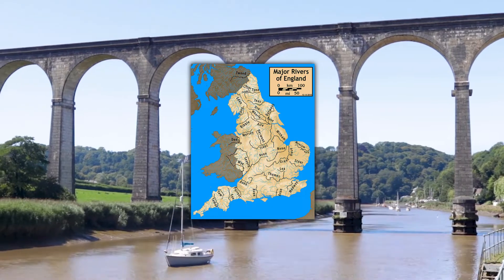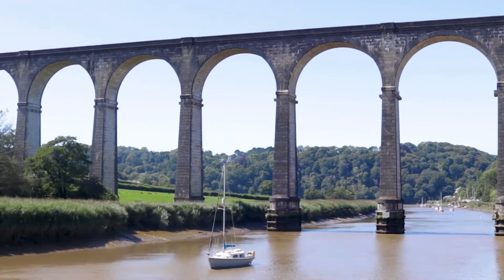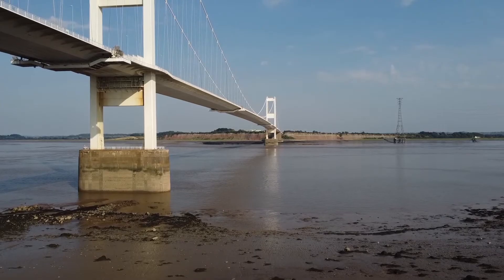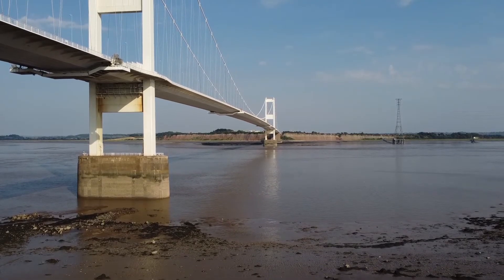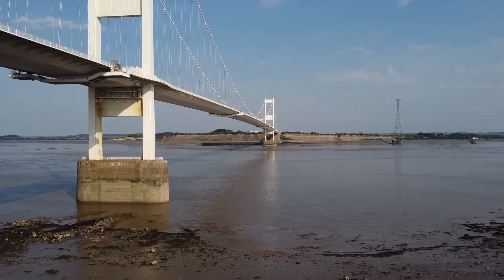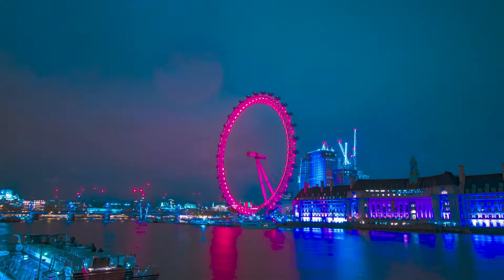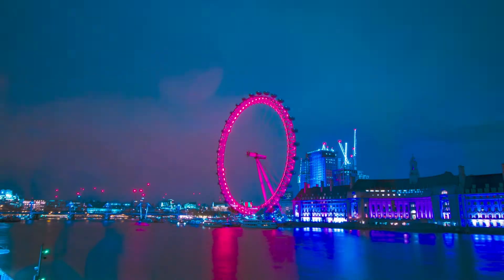The UK is also home to many major river systems. The longest river in the UK is the Severn, which runs for over 350km through England and Wales. Other major rivers include the Thames, Tyne and Trent in England, and the Tay and Tweed in Scotland.